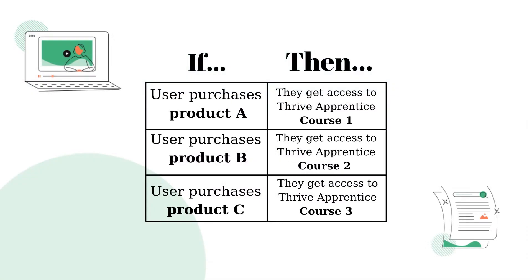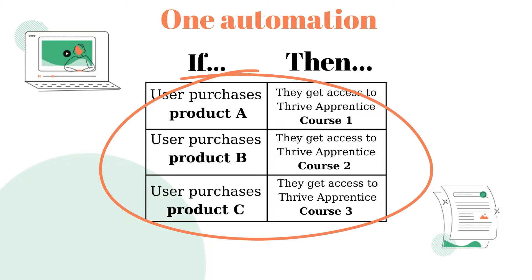For example, if you have set up some products in a payment processor of your choice such as Stripe, Digistore24 and so on, and you want each product to give a user access to different TRIVE Apprentice products or courses, you can do that using a single automation without having to create a new automation for each of the products and their matching TRIVE Apprentice products.